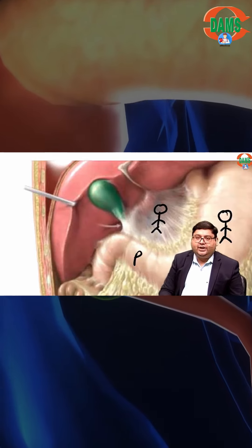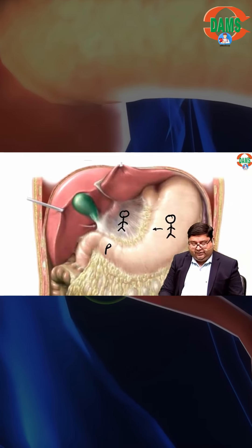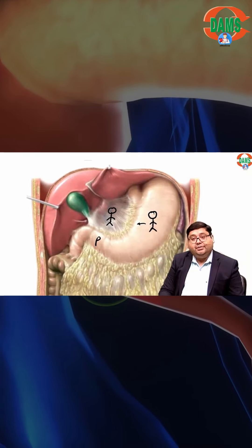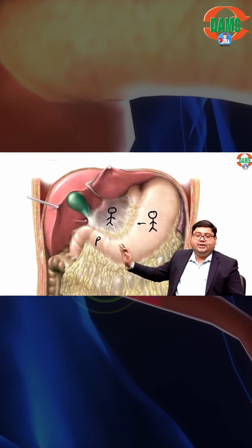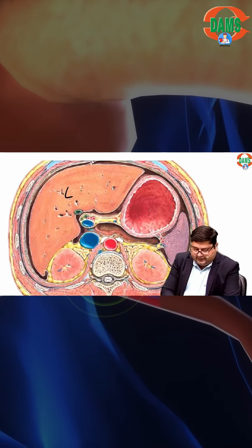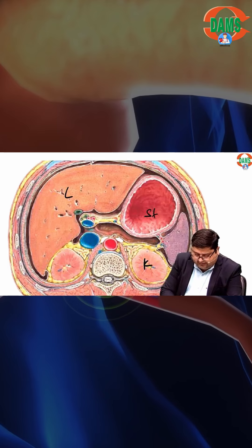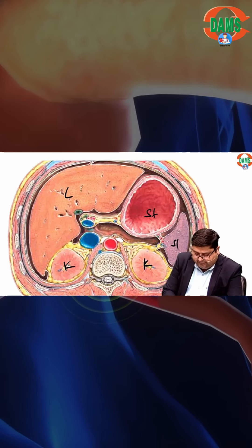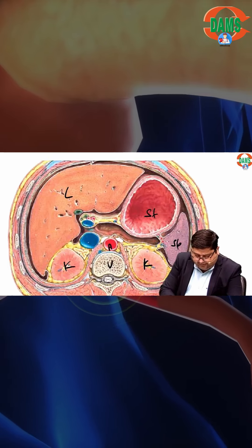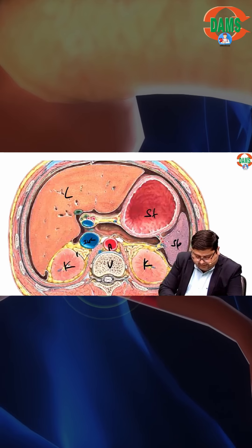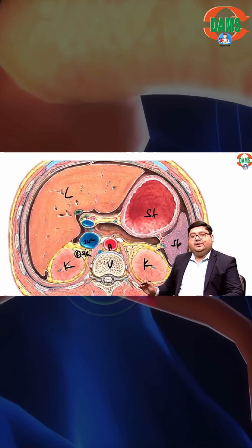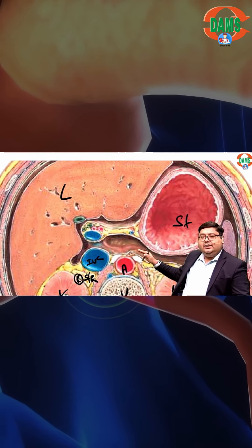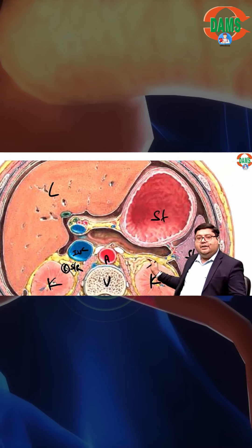What makes the posterior boundary cannot be understood with just the liver. Here we have the liver, the stomach, the kidneys, the spleen, the vertebra, the IVC, and the right suprarenal gland. Now you can see that this is the lesser sac.